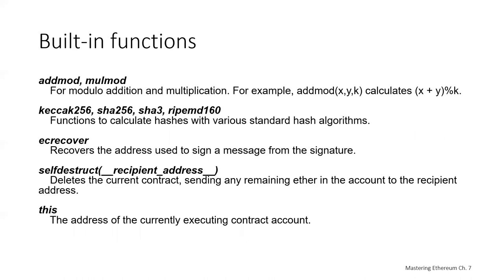There are a number of other built-in functions worth mentioning. Some of the more interesting ones include addmod and mulmod for modular addition and multiplication. We've got hash calculator functions like keccak256, sha256, sha3, and ripemd160 to calculate hashes with various standard hash algorithms. ECrecovery recovers the address used to sign a message from a digital signature. Selfdestruct, given a recipient address argument, will delete the current contract, send any remaining ether, and credit the recipient address.